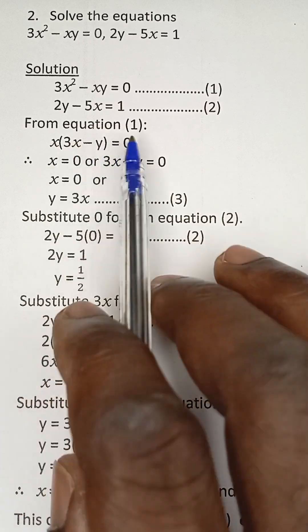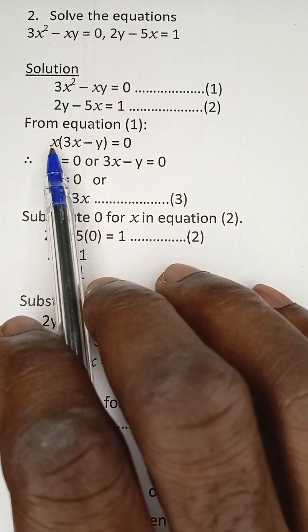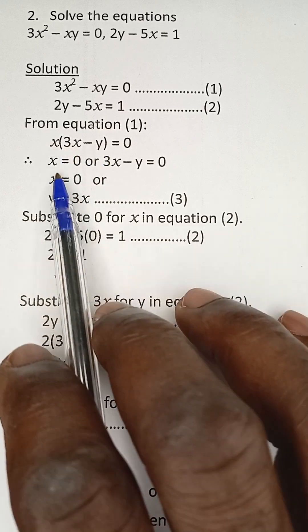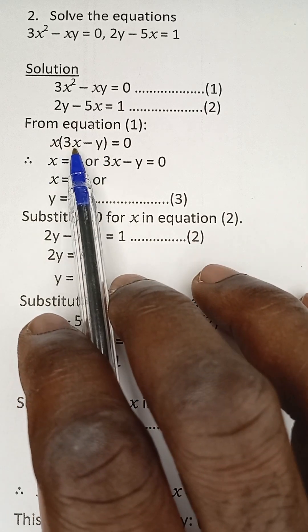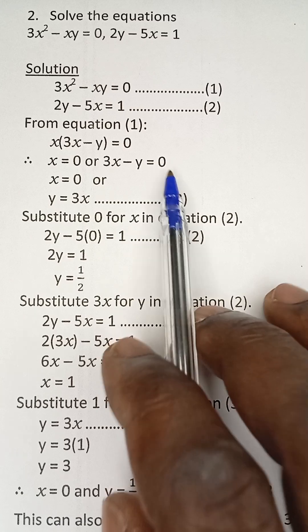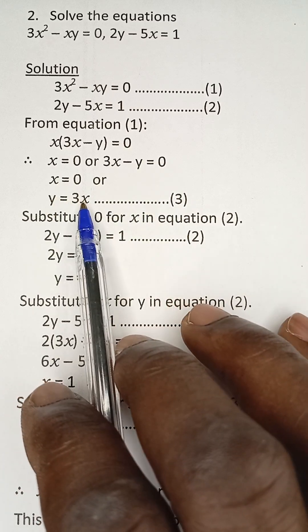we can equate each of the brackets to 0. When we equate x to 0, we have x = 0. When we equate 3x - y to 0, that will give us y = 3x.